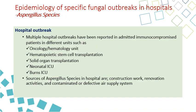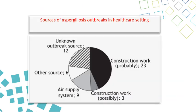Hospital outbreaks have been reported among immunocompromised patients, especially in specific units including oncology and hematology units, hematopoietic stem cell transplant units, solid organ transplant units, neonatal ICUs, and burns ICUs. The main sources of Aspergillus species are construction work, renovation activities, and contaminated or defective air supply systems — which are the major causes of Aspergillus spores leading to lung infection or severe aspergillosis.